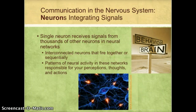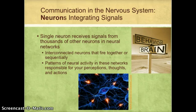In our simple explanation for how neurons work, we talked about one neuron talking to another neuron. But in reality, the nervous system doesn't work that way. A single neuron actually receives signals from thousands of other neurons, and these neurons that send and receive signals from one another are called a neural network. Some neural networks have neurons that fire together, so they all sort of fire at once.